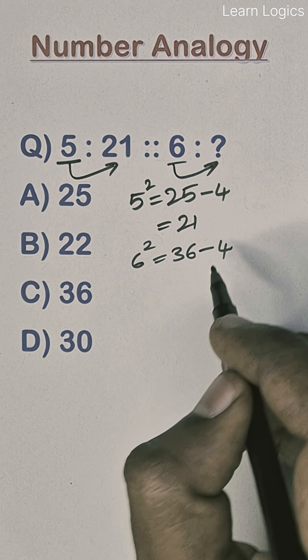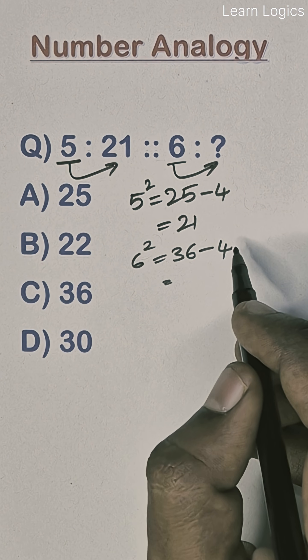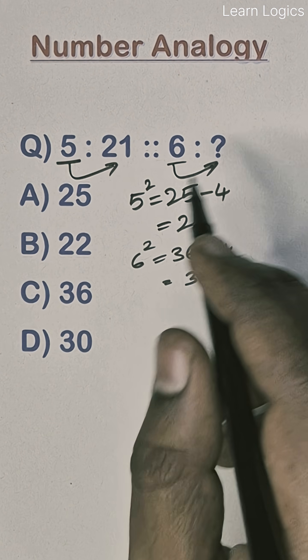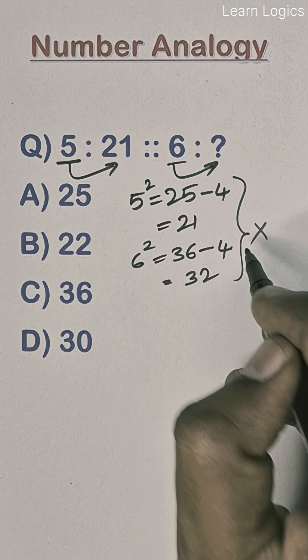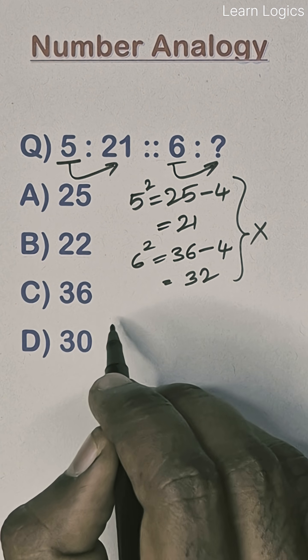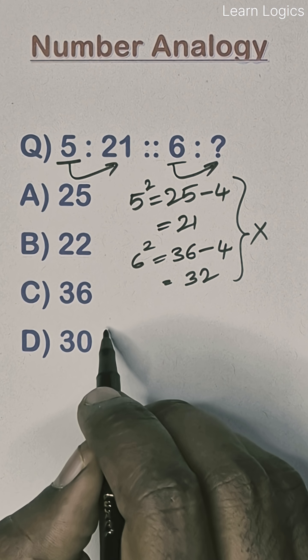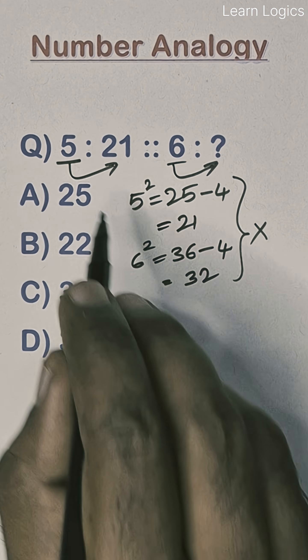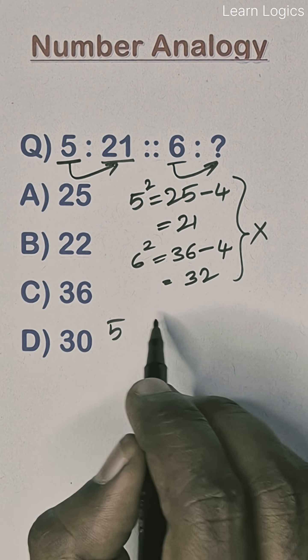So 6, 6 square is 36 minus 4, which is 32. 32 is not there in the options, so this method is wrong.